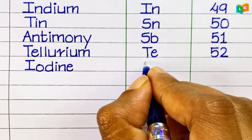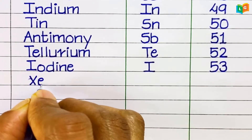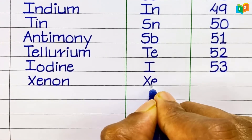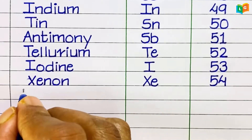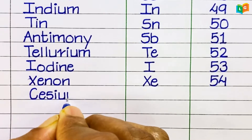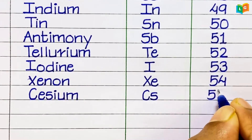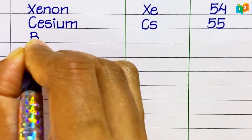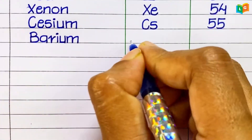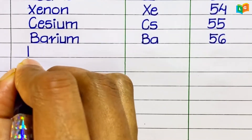Iodine, symbol I, atomic number 53. Xenon, symbol Xe, atomic number 54. Caesium, symbol Cs, atomic number 55. Barium, symbol Ba, atomic number 56.